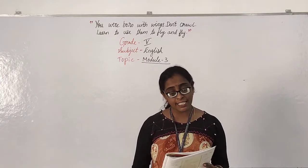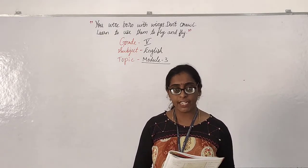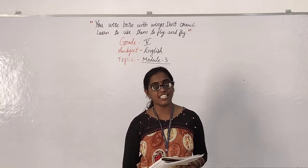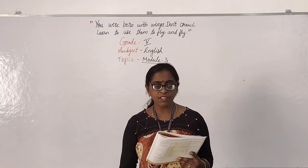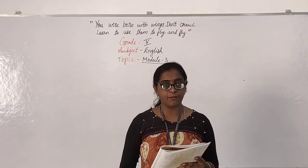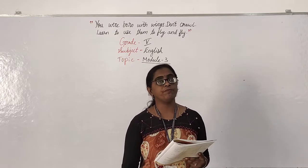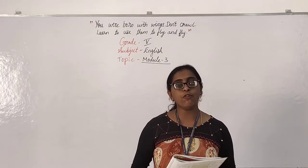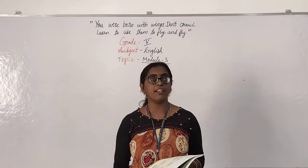We write letters for different purposes — to our friends, or to request our teacher to give permission when we are sick. Formal writings are written to an adult, a person of authority, or somebody we are not close to. Friendly letters are written to friends, family, or somebody we are very familiar with.